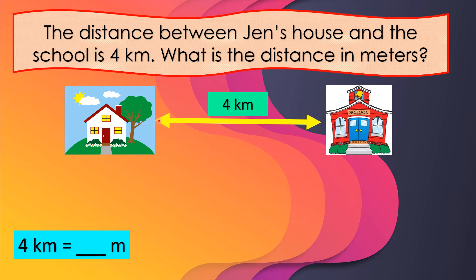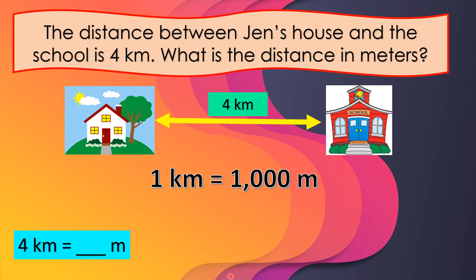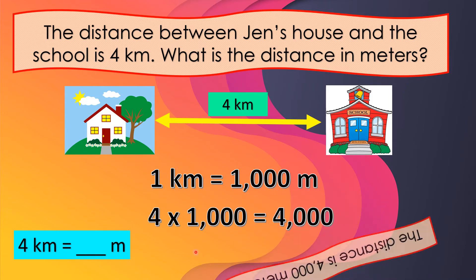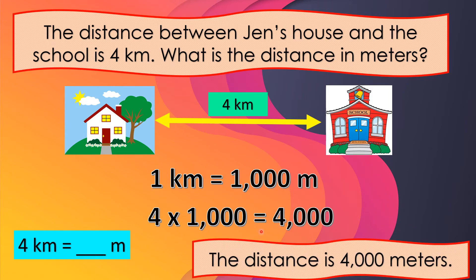The distance between Jen's house and the school is four kilometers. What is the distance in meters? You are going to find out how many meters are there in four kilometers. Remember that one kilometer is equal to one thousand meters. So four kilometers times one thousand equals four thousand meters. The distance is four thousand meters.